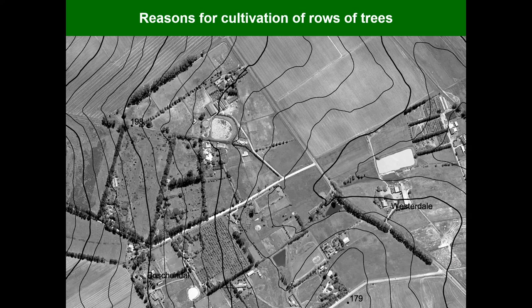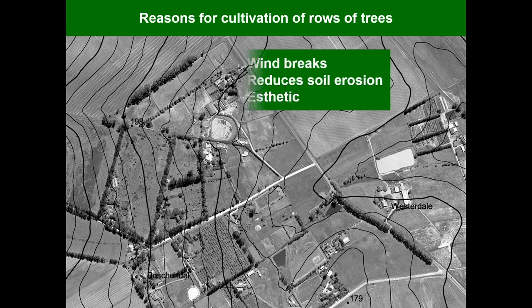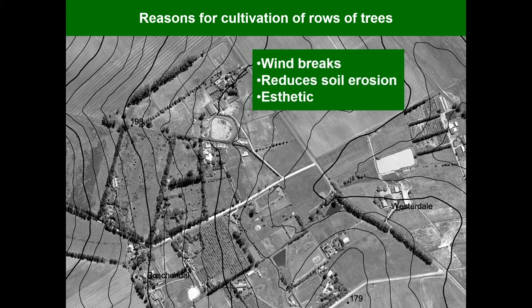With interpretations of maps, the reasons for cultivation of rows of trees can be as follows: they serve as windbreaks, they reduce soil erosion, as well as for aesthetic purposes.